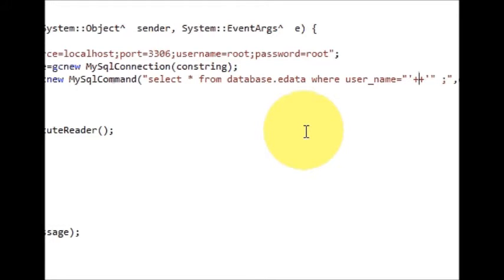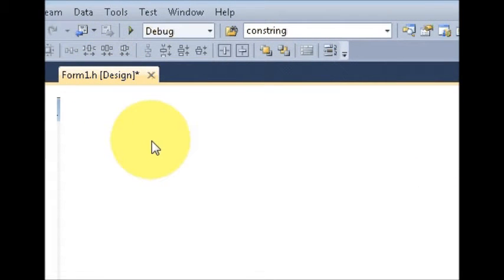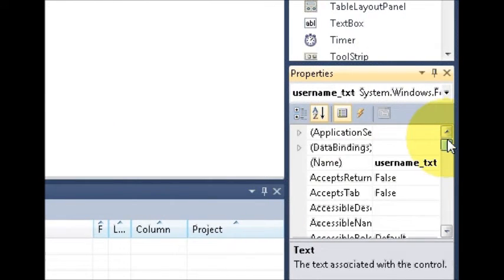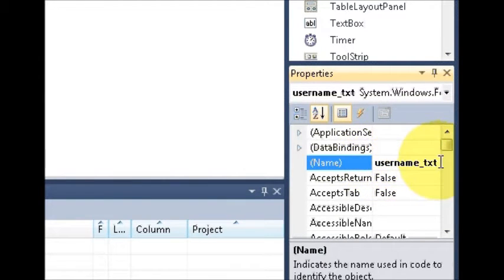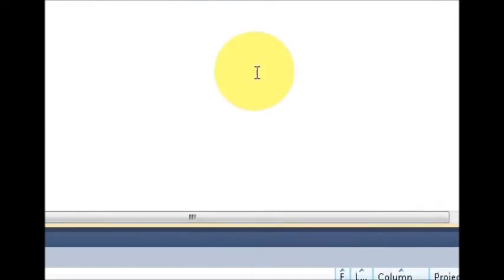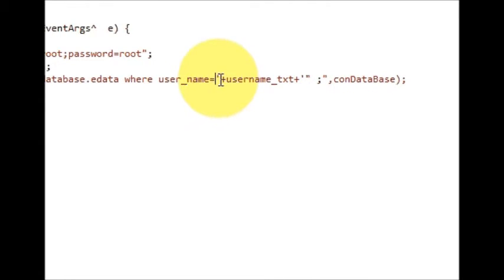In between two double plus signs we will write the username text box name. Click the username text box, go to the properties, and copy the name of this text box which we provided earlier. Paste it here in between these two plus signs. Delete the double quotes and after your single quote provide a double quote, so it is: equals single quote, then double quote, then plus, then your variable name.